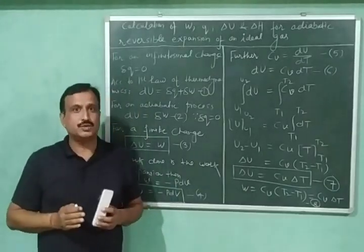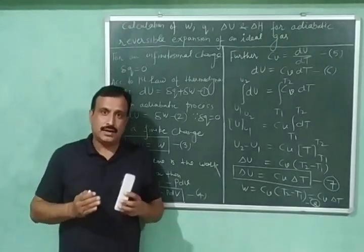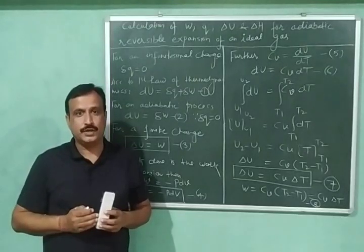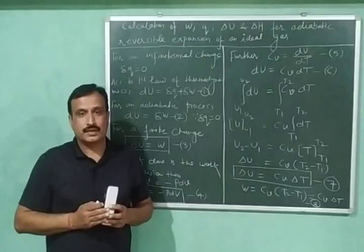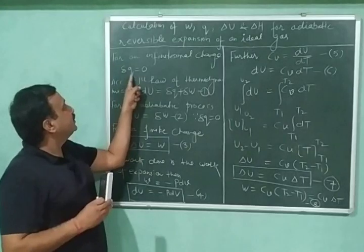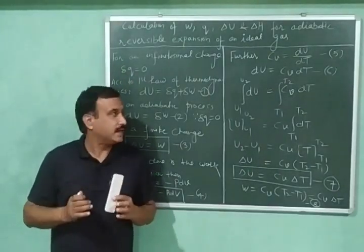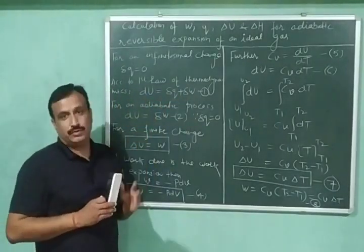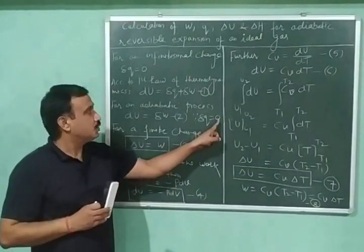We are calculating these quantities for an adiabatic reversible expansion of an ideal gas. We know that during an adiabatic process, no heat enters or leaves the system, so there will be no change in heat. For an infinitesimally small change, delta q is equal to zero. According to the first law of thermodynamics, dU is equal to delta q plus delta w, and since the process is adiabatic, delta q equals zero.